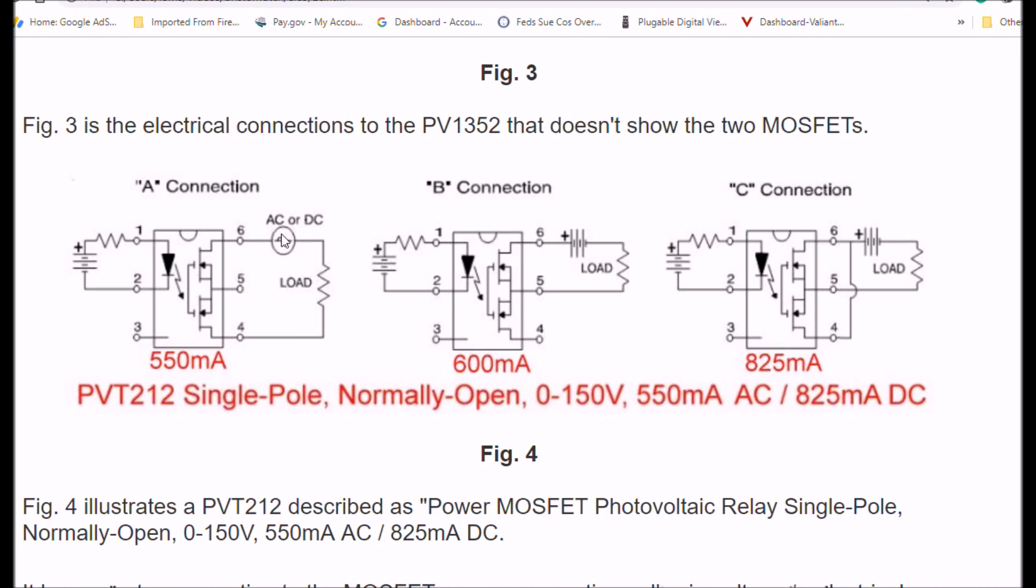So, you can connect it up for AC-DC, as shown here. You can connect it up just to do DC, as shown here, at 600 milliamps. Or you can connect drain-to-drain and connect your load and a voltage between the sources and the drains, and you could switch 825 milliamps.